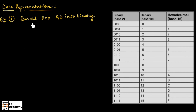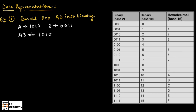Now let us convert the hexadecimal number A3 into binary. From the table, A has the binary equivalent 1010, and 3 has the binary equivalent 0011. We can combine these two numbers: A3 in hexadecimal is represented as 10100011 in base 2.